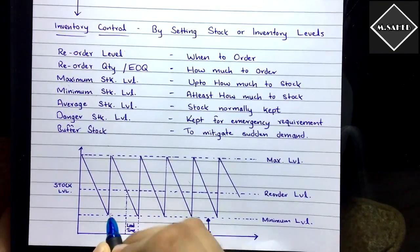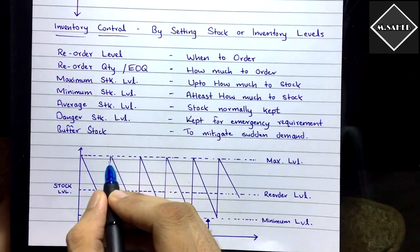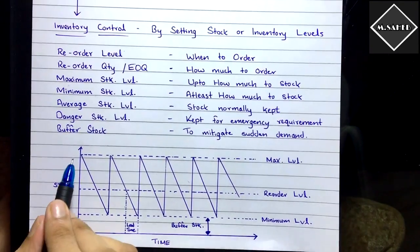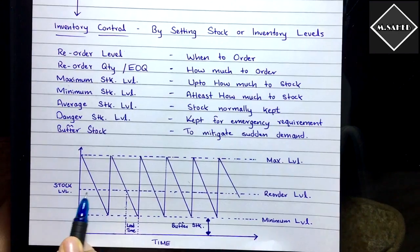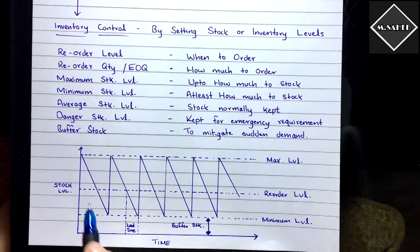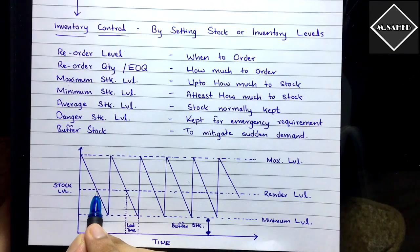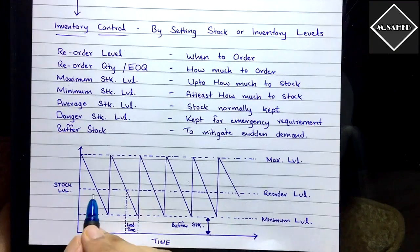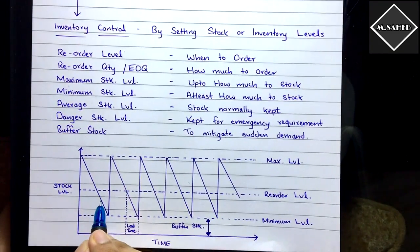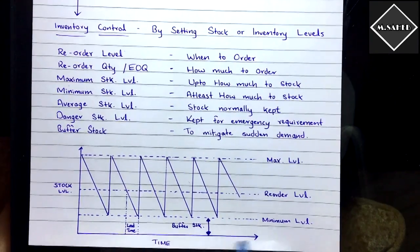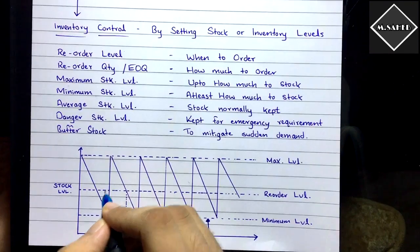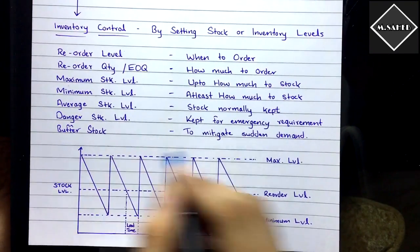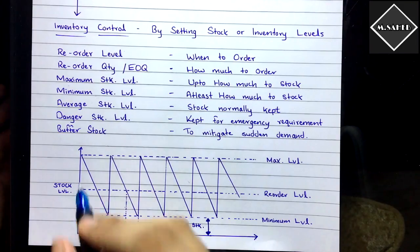When the order is delivered, your stock immediately increases back to the maximum level. So the cycle is: stock starts at maximum, you use it up, it reaches reorder level and you place an order, it continues reducing through the lead time until it hits minimum level, then the order arrives and stock jumps back to maximum.